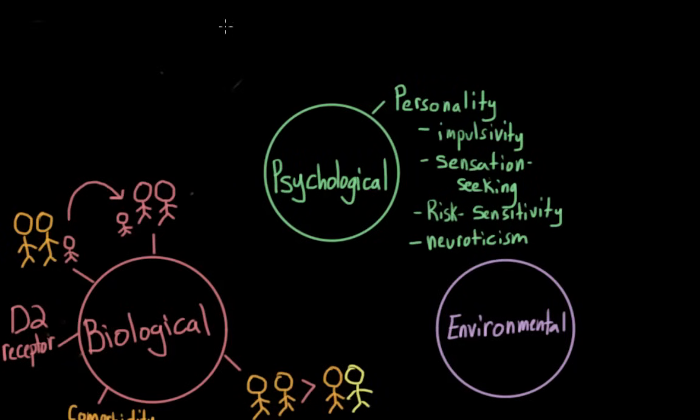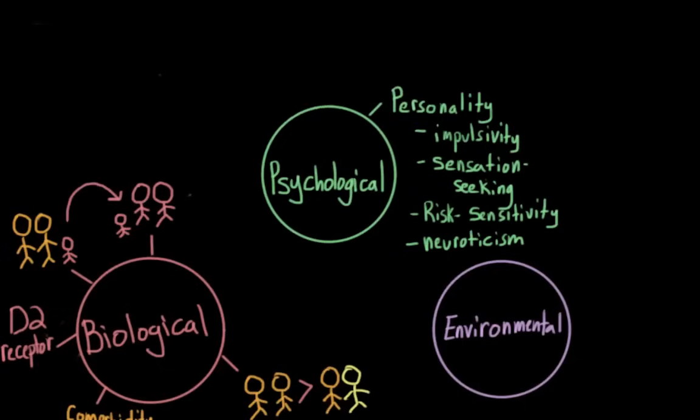There are other psychological factors that can play a role that aren't personality traits. For example, we also know that individuals who tend to score high on aggression tests, so individuals who have feelings of aggression and aggressive behaviors who also tend to act out at school or at home, they also seem to be at a higher risk of developing addiction later in life.